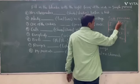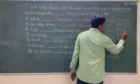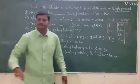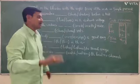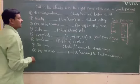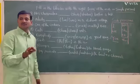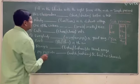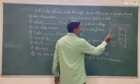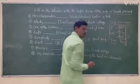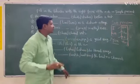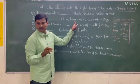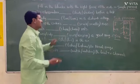He, she, it — these three are called third person singulars. Now, in the previous class, in simple present, with the subjects he, she, it, we should use the verb with -s or -es. Do you remember that?